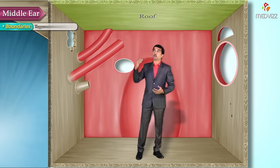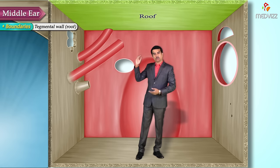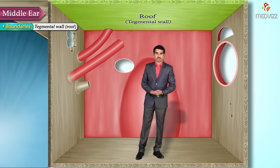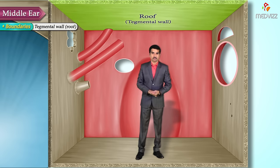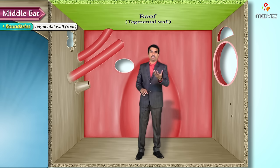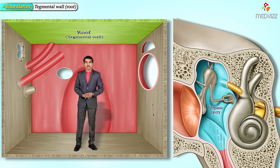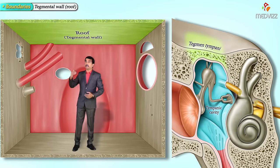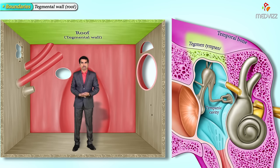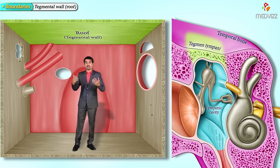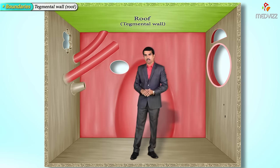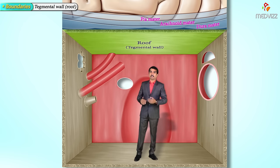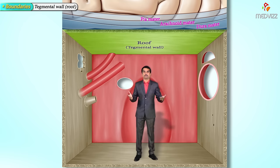The roof of the middle ear cavity is also called the tegmental wall. It is formed by the tegmen tympani, which is a thin plate of the petrous part of the temporal bone forming the roof of the canal for the tensor tympani muscle and the tympanic antrum. This wall separates the dura mater at the floor of the middle cranial fossa from the tympanic cavity, with the cerebral cortex above.